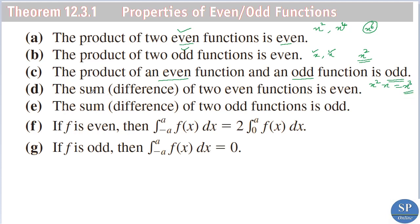The fourth property: the sum or difference of even functions is again even. If we have two even functions, then their sum or difference is again an even function. And the sum or difference of two odd functions is again an odd function.